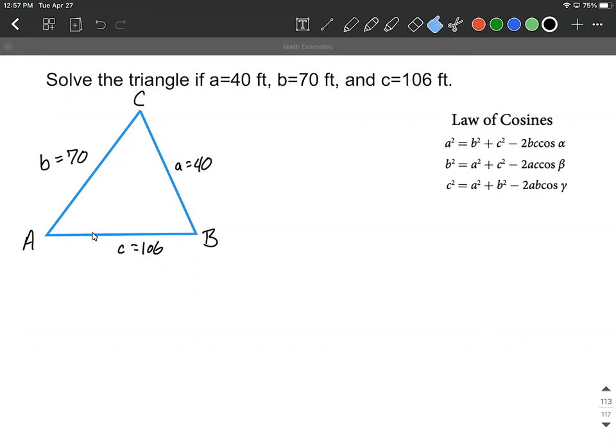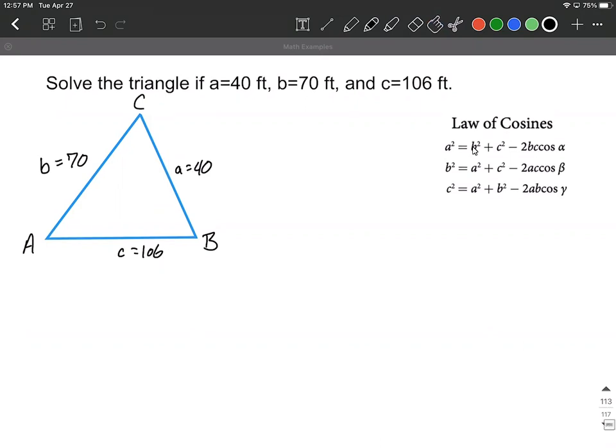So in doing this, this is like the alpha in the formula over on the right hand side, that it's going to be whatever is opposite side A. So I'm going to use the top version of our law of cosines. So I'm going to go ahead and say 40 squared is going to equal b squared, which is 70 squared, plus c squared, 106 squared, minus two times b times c multiplied by the cosine. In our case, I'm going to call it A.